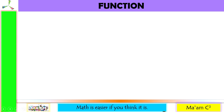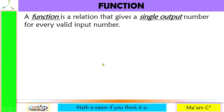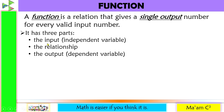Let us define function. It is a relation that gives a single output number for every valid input number. It has three parts: the input, also known as the independent variable; the relationship; and the output, or the dependent variable.